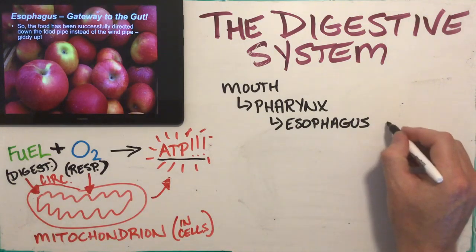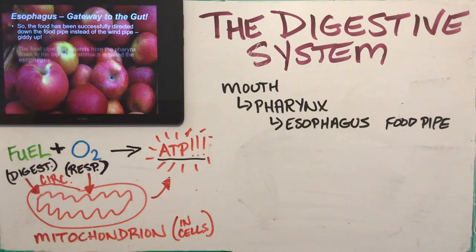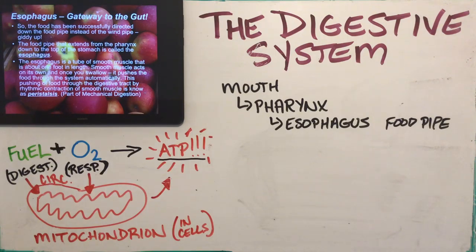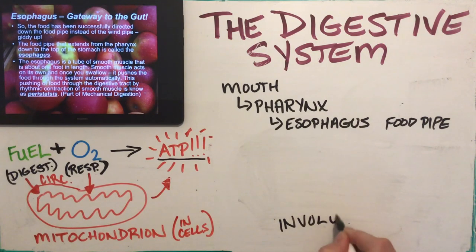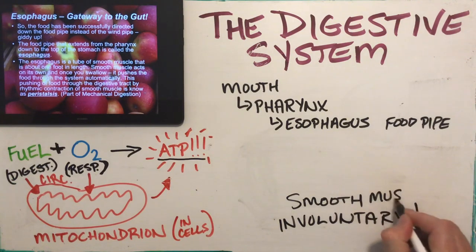The esophagus is our food pipe — we have a windpipe and a food pipe. This is how food gets deeper down into our stomach. The esophagus is about a foot long, going from the base of your ribs up to the back of your throat. It's basically just a muscular tube; the type of muscle is smooth muscle, which makes up that circular and longitudinal muscle we mentioned. Smooth muscle is automatic and involuntary, meaning you are not in control of it.